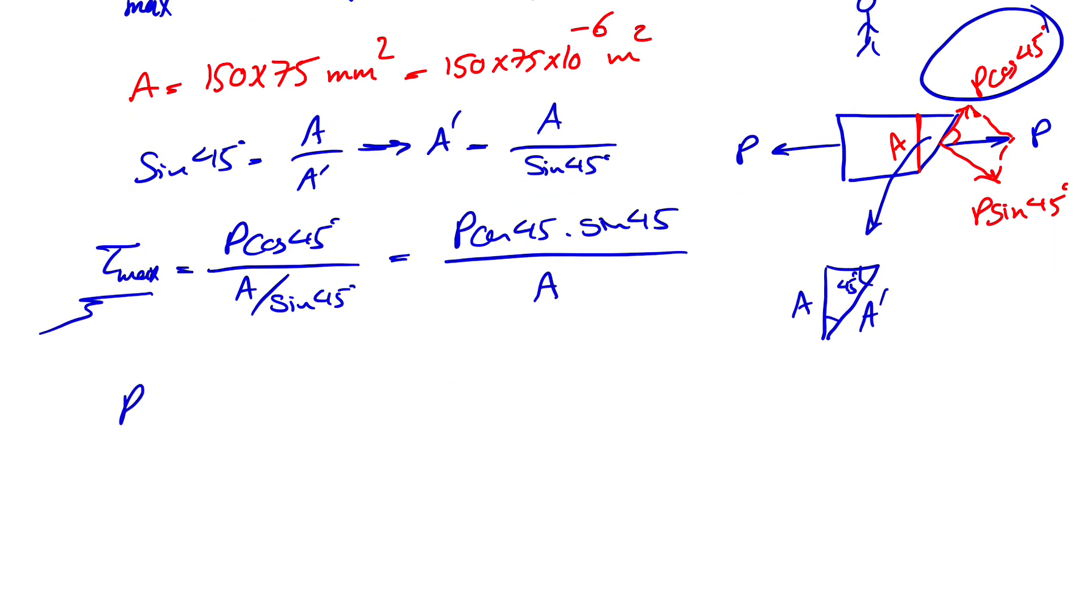Now we can find our P, so P would be basically A times the maximum of shearing rate over cosine of 45 times sine of 45.